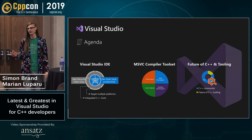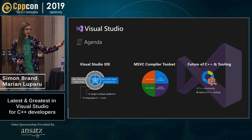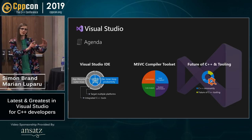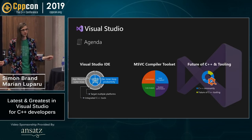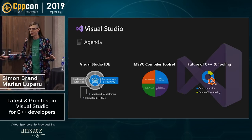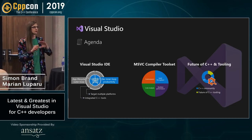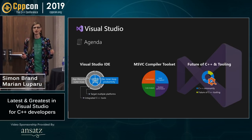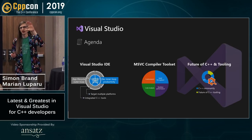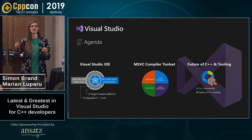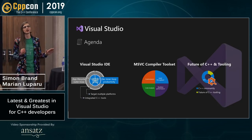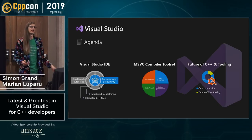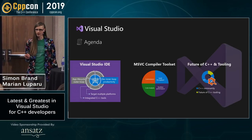Our agenda for today: we'll start with the IDE — making the developer inner loop as productive as possible, targeting multiple platforms from Visual Studio, and integrating tooling from across the industry. Then we'll talk about our compiler: conformance, build throughput, code analysis, and runtime performance. Finally, we'll look at what's coming in C++ and what the community is interested in.